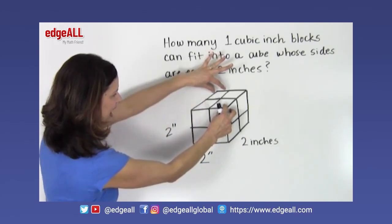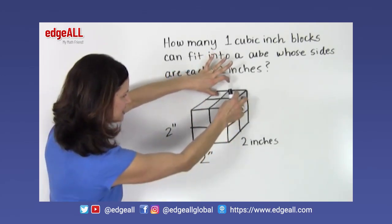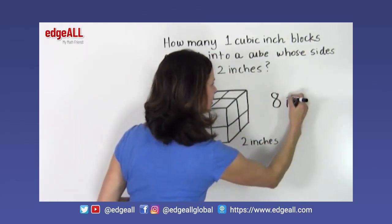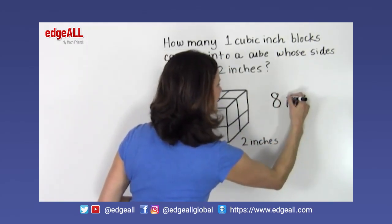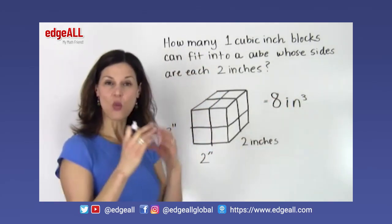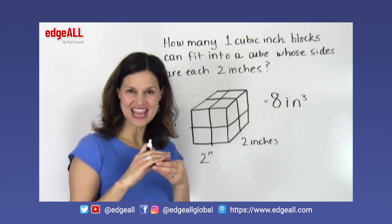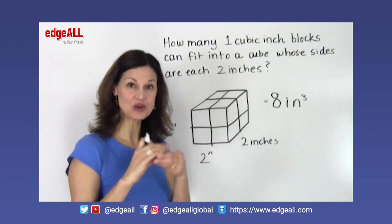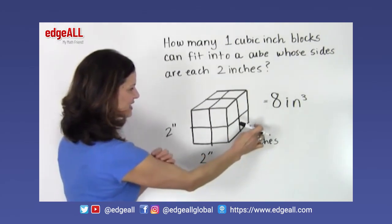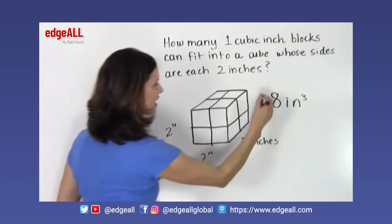And in this back half here I'd have 1, 2, 3, 4 more. So I would have a total of 8 cubic inches or 8, 1 inch by 1 inch by 1 inch cube blocks fitting into this 2 by 2 by 2 larger cube.